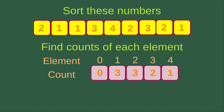For element 2, we also have three elements, so the number of elements for 2 is 3. And for number 3, we have 2, so the count is 2. And for number 4, I have only 1, so the count for 4 is just 1.